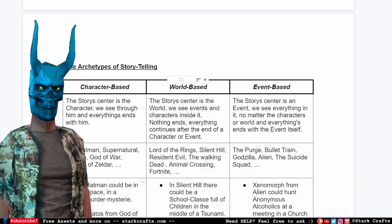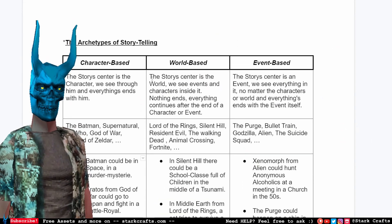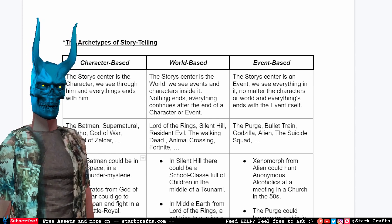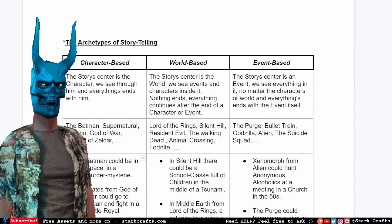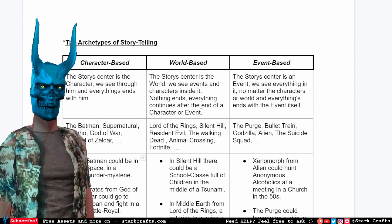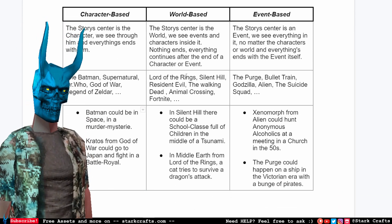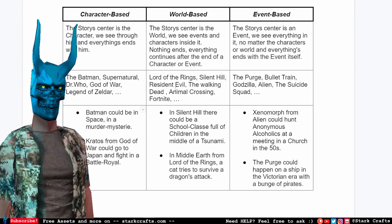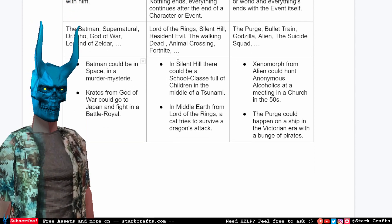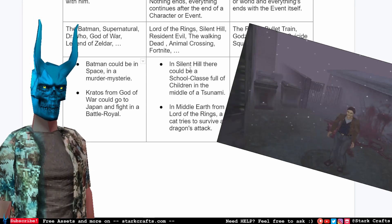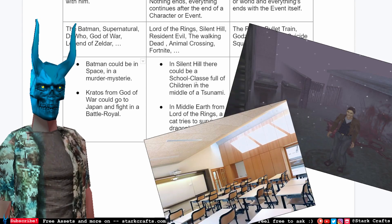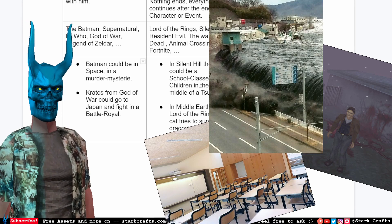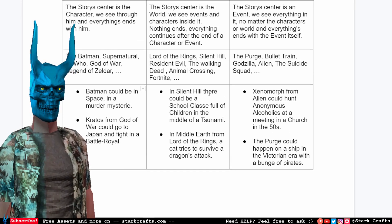In world-based storytelling, the story is centered around the world. We see every event, and characters inside don't define it — everything continues after the end of a character or event. Examples include Lord of the Rings, Silent Hill, Resident Evil, The Walking Dead, Animal Crossing, and Fortnite. In a thought experiment, Silent Hill could have a school field trip with children in the middle of the town, or even a tsunami — storytelling-wise it makes total sense because we kept everything inside the world's parameters.